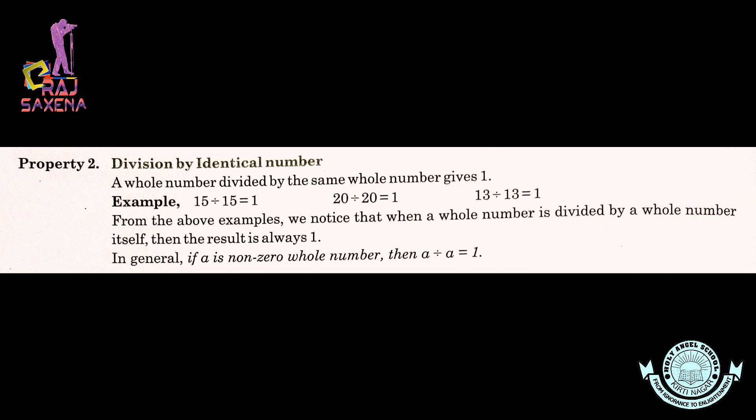Property number two — Division by identical number. A whole number divided by the same whole number gives the result 1. Agar kisi bhi whole number ko usi whole number se divide kia jaye toh uska quotient hamesha 1 hota hai. For example, 15 divided by 15 gives 1, 20 divided by 20 gives 1, 13 divided by 13 gives 1. In general, if A is a non-zero whole number then A divided by A is always equal to 1.